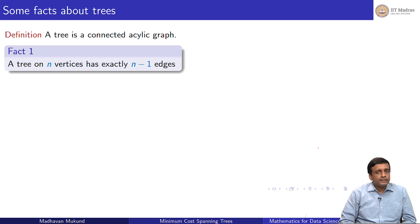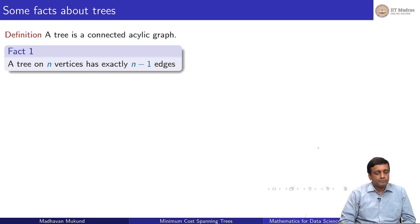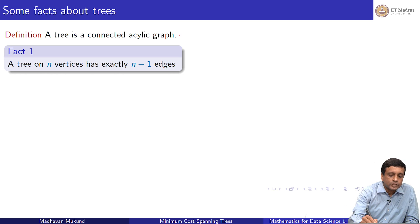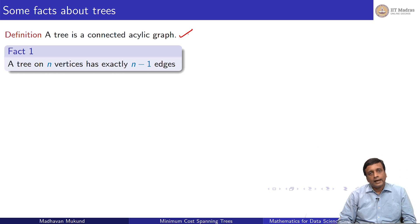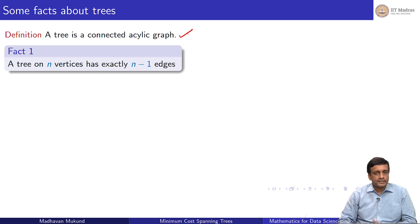To design algorithms for finding minimum cost spanning trees, we will use some basic facts about trees. The basic definition of a tree is that it is a connected acyclic undirected graph on n vertices. The first fact is that such a tree must have exactly n minus 1 edges — not more, not less.